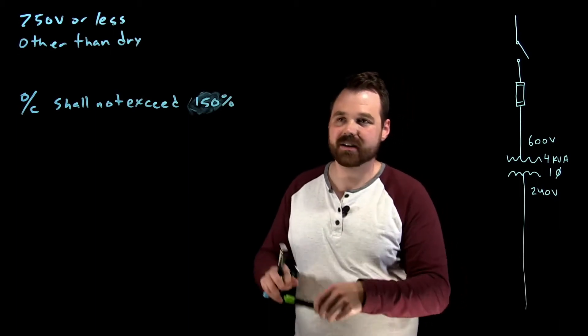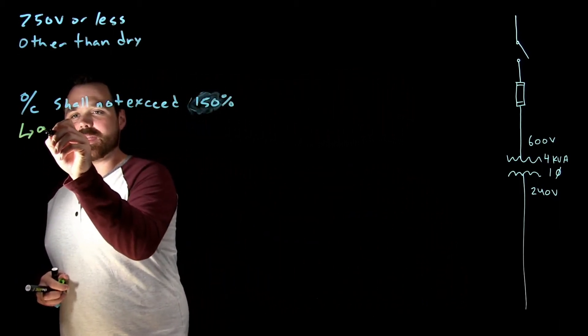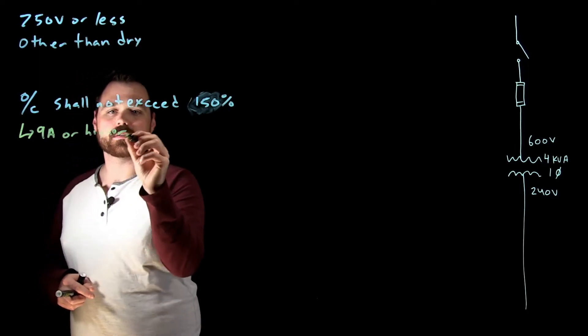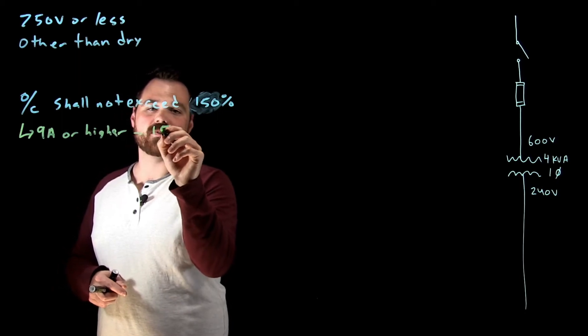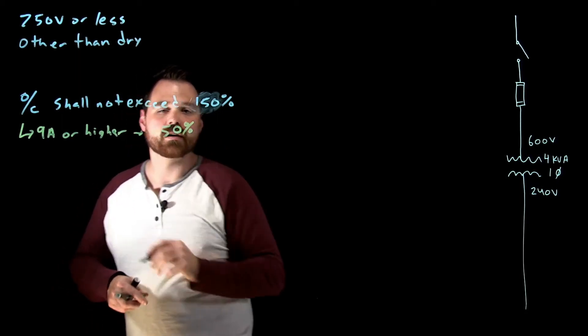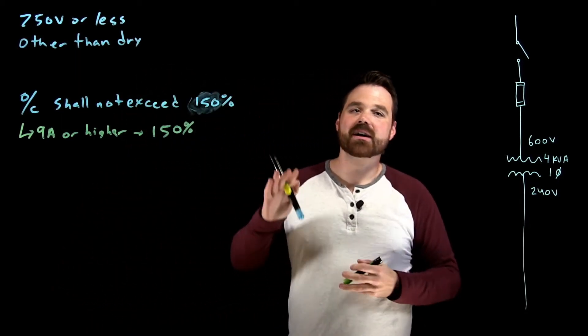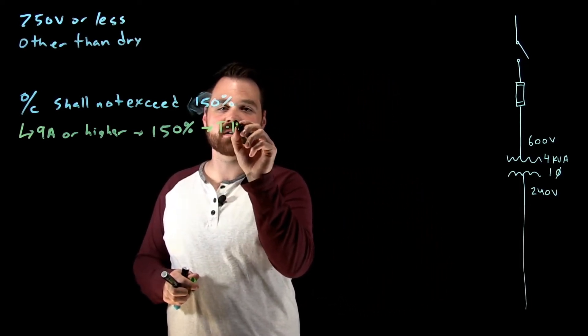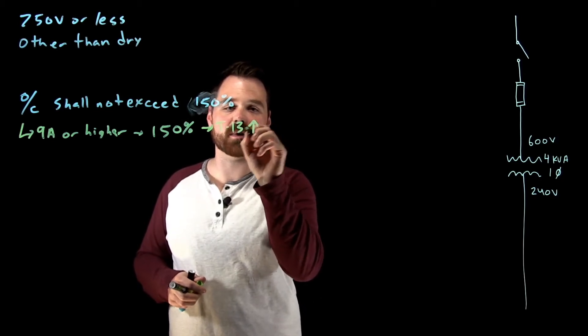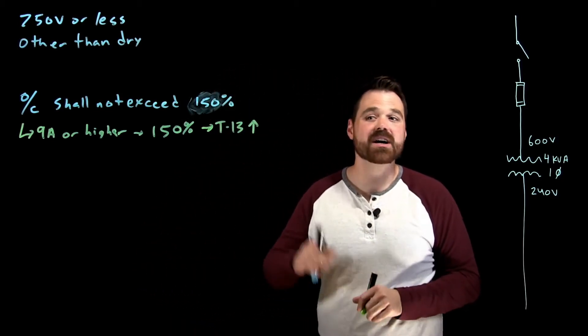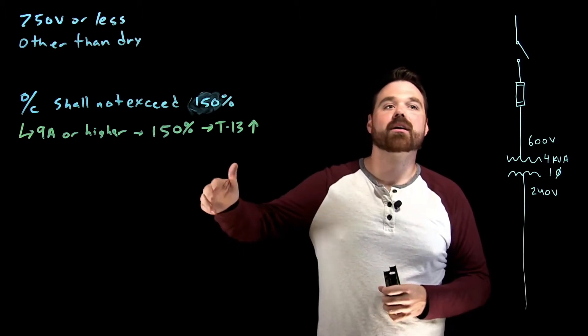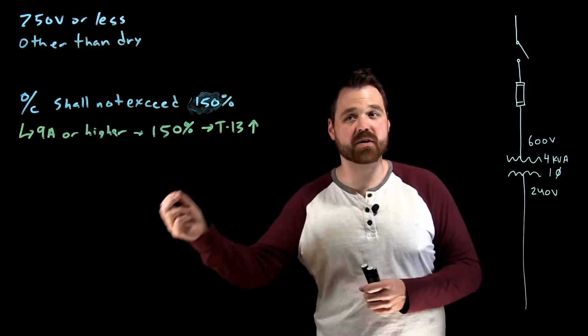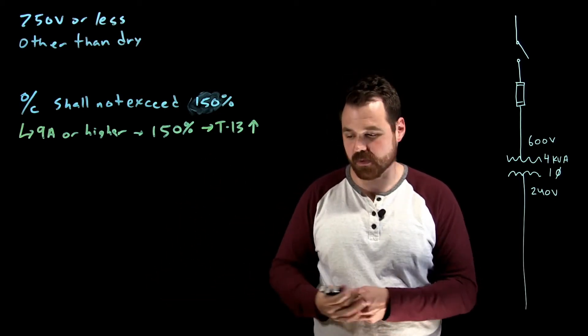Okay, if you are nine amps or higher, then it's 150% of the rated current. And if that's not available when you go to table 13, you are permitted to go up to a next higher size. So it says, if 150% of the rated current is not available as an overcurrent device, the next higher size shall be permitted.